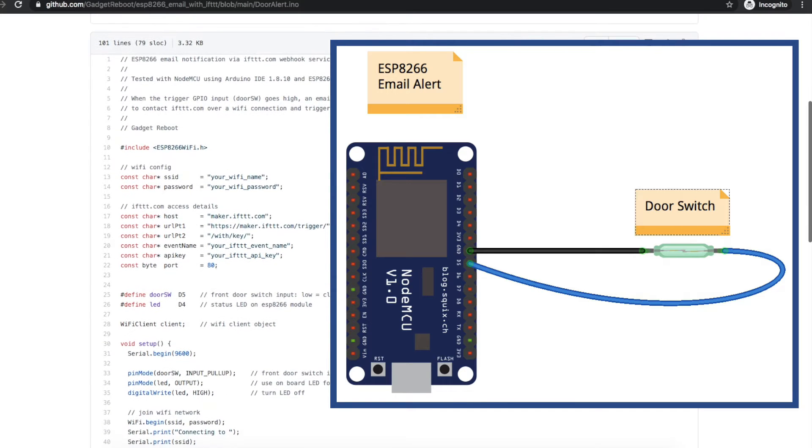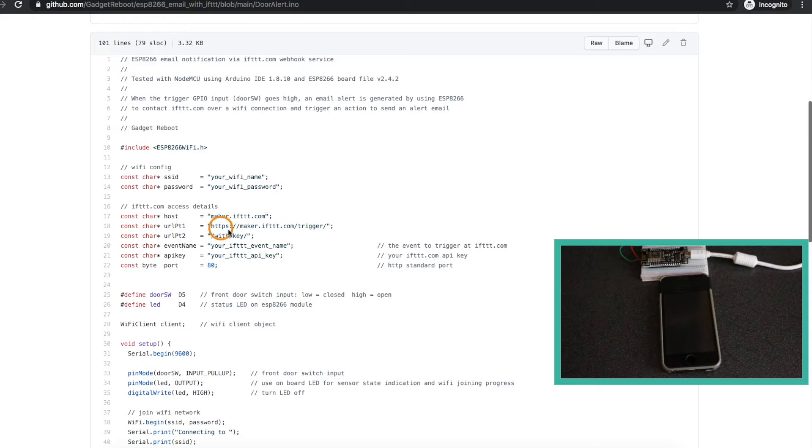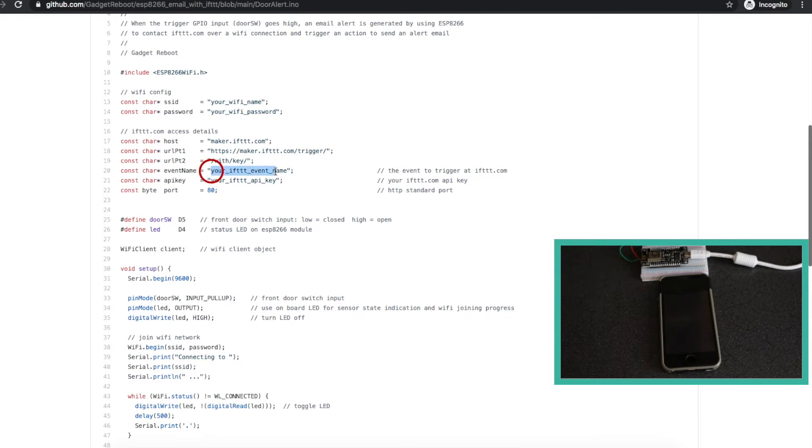The sketch I came up with is a combination of some usual Wi-Fi ESP8266 stuff, as well as from googling around for how to use if this then that. So a lot of this is just standard stuff. So whatever event name you came up with on the website, and whatever your API key is for this website, you would enter those there. And later in the sketch, when it's time to trigger an email event, these strings here get combined together, and it gets sent out to IFTTT, and you get the email alert.